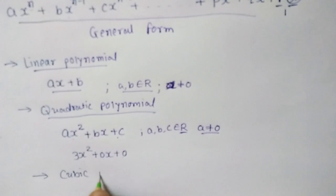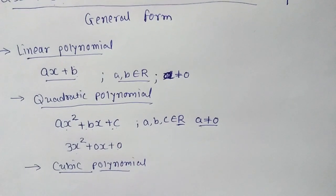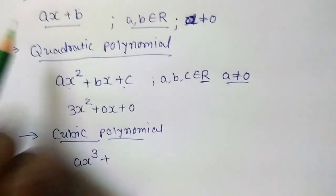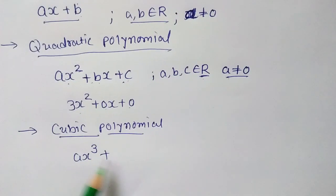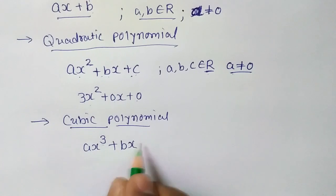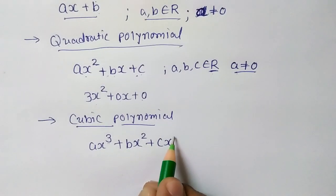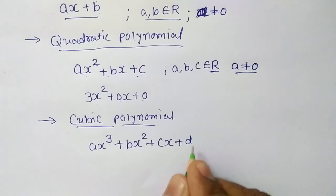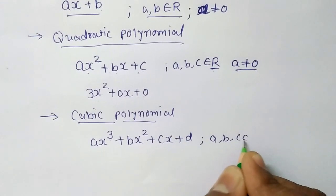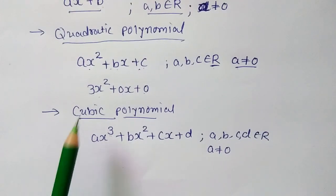The next type is the cubic polynomial. Cubic means power 3. If we begin the polynomial with x raise to 3, the next term following the general form has power 3 minus 1 equals 2, giving b into x squared. Then c into x raise to 1, and finally d into x raise to 0, which is d. So the cubic polynomial is ax cubed plus bx squared plus cx plus d. The condition is that a, b, c, d all belong to R and a is not equal to 0.